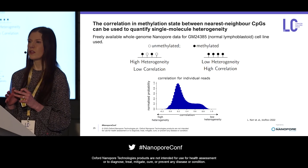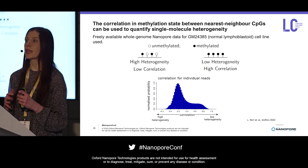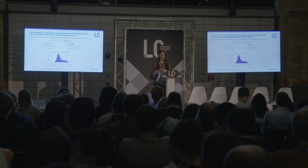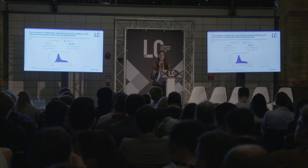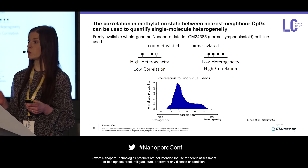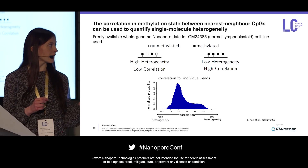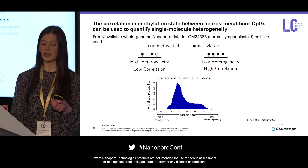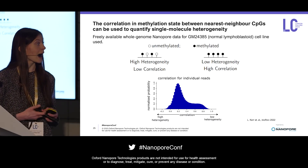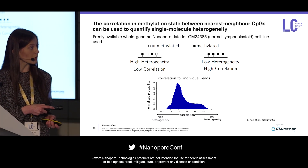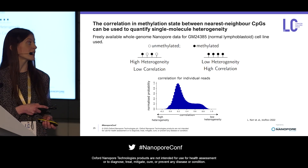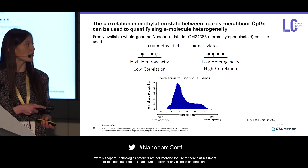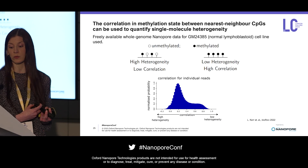I took about 3 million reads from the Nanopore dataset that contained methylation information for at least 100 CpGs, to restrict attention to large patterns. For each of these reads, I calculated the correlation in methylation state between neighbouring CpG sites. The resulting distribution shows some reads where the correlation is pretty high — indicating low heterogeneity — and other reads where the correlation is much lower, indicating higher heterogeneity in the underlying single molecule pattern.